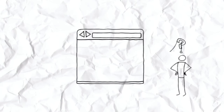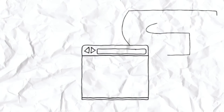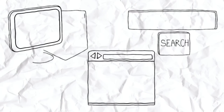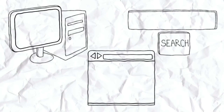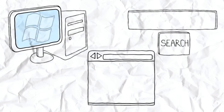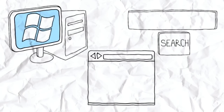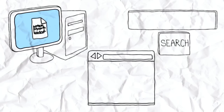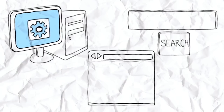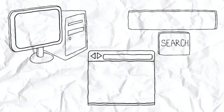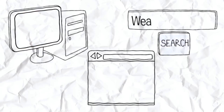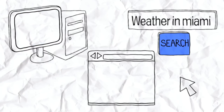Let me try to explain by first telling you what a web browser is not. A web browser is different from Windows or Mac, which are systems that allow you to manage files and programs. And it's different from a search engine, which is a website that is used to search the internet.